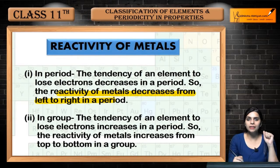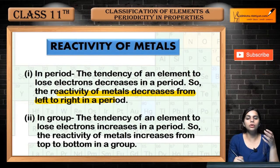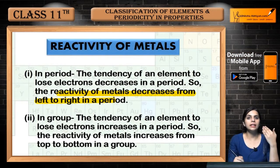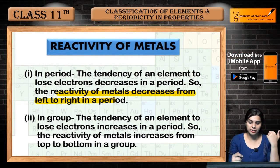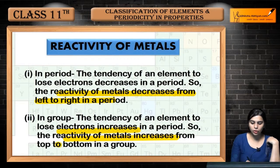If we talk about the group — moving down the group, you can more easily lose electrons. When you can easily lose electrons, your reactivity increases. So when we move from top to bottom, the reactivity of metals increases. The tendency of elements to lose electrons increases down a group, so the reactivity of metals increases from top to bottom in a group.